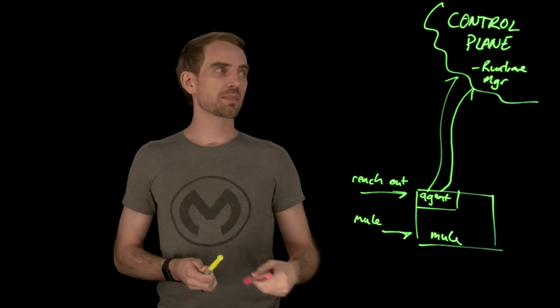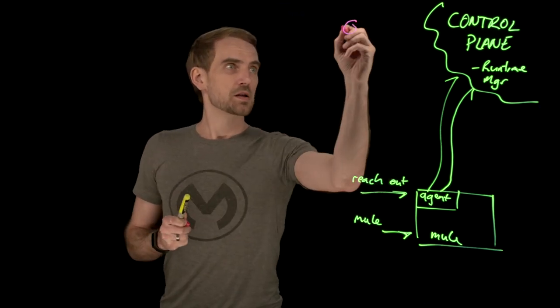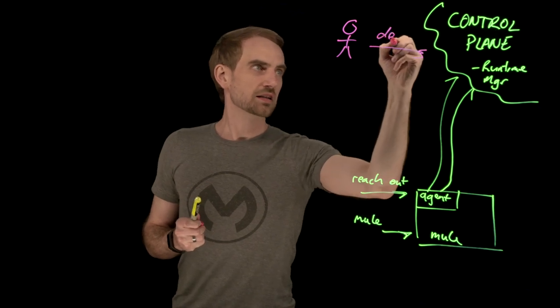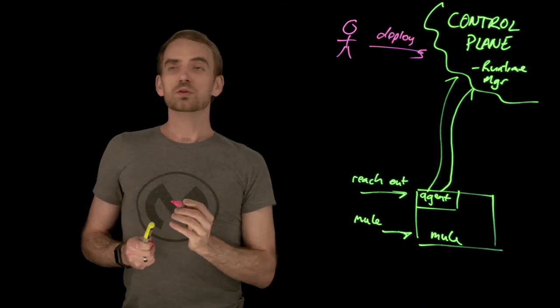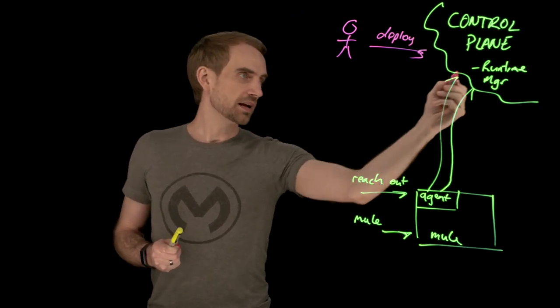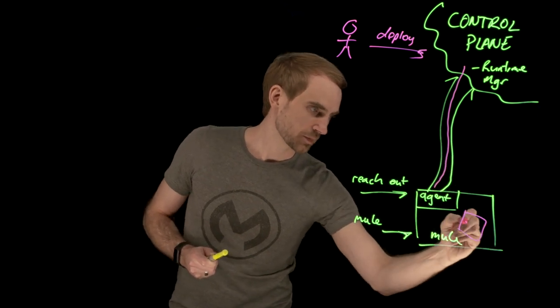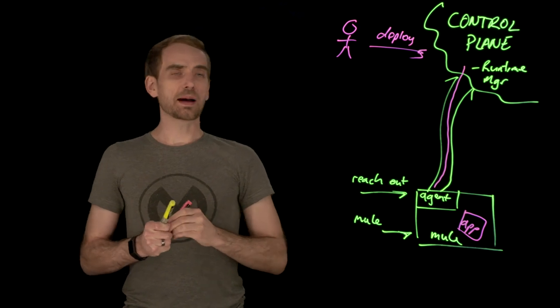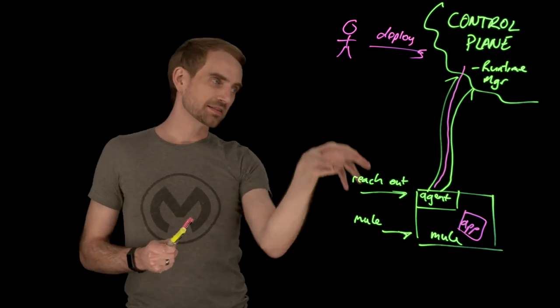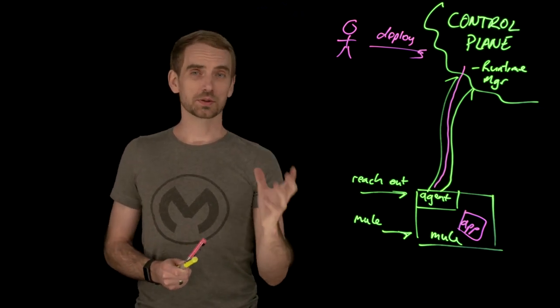And then the runtime manager can issue commands like deploy an application. So you say deploy. You tell the control plane runtime manager I want to deploy this app to this target. And then it communicates down through the agent which then deploys your app. So that is how the app manages to get from going out to the control plane, back down this secure channel, using the agent's functionality. It talks to the Mule runtime and says deploy this application.